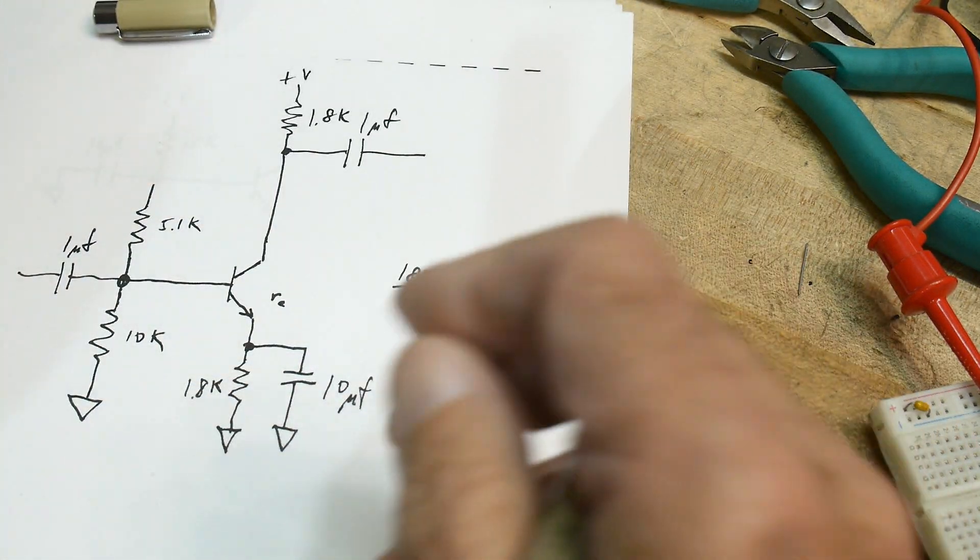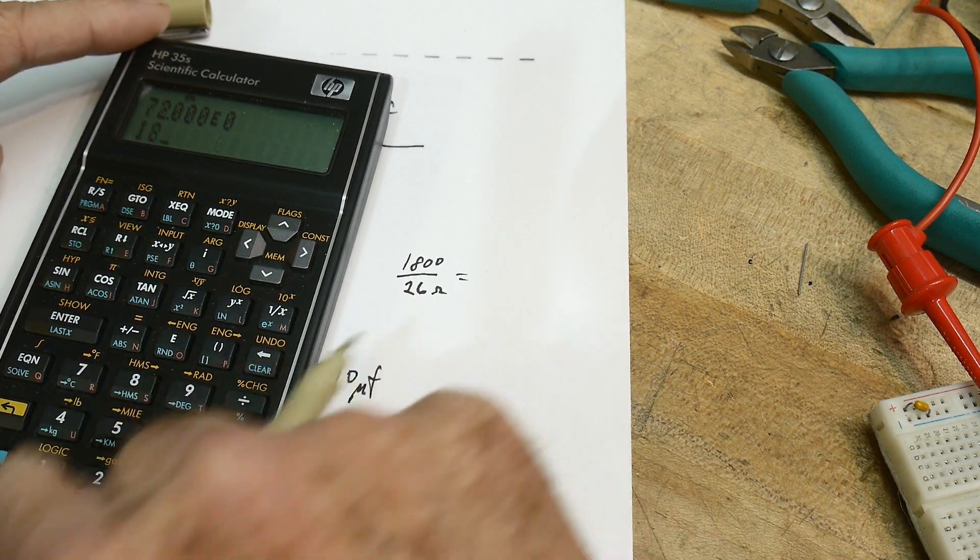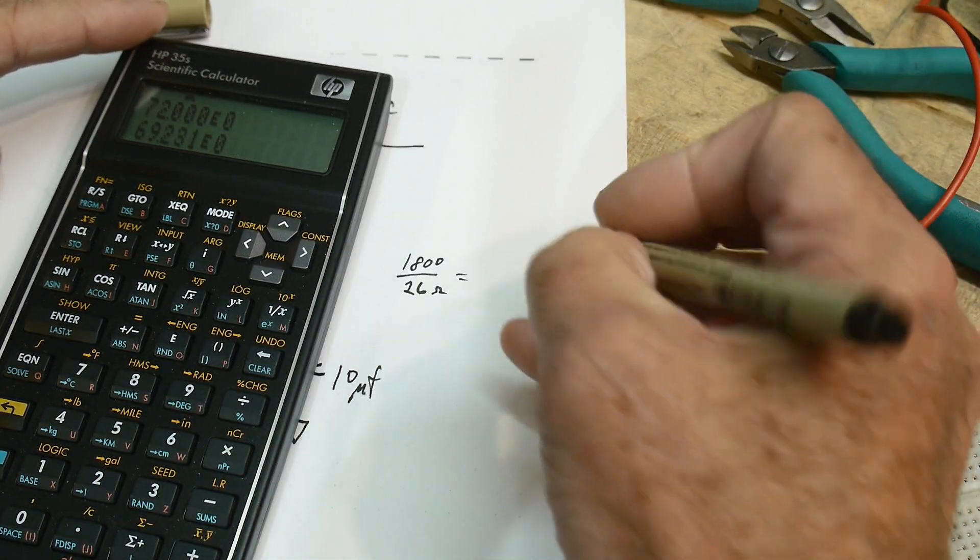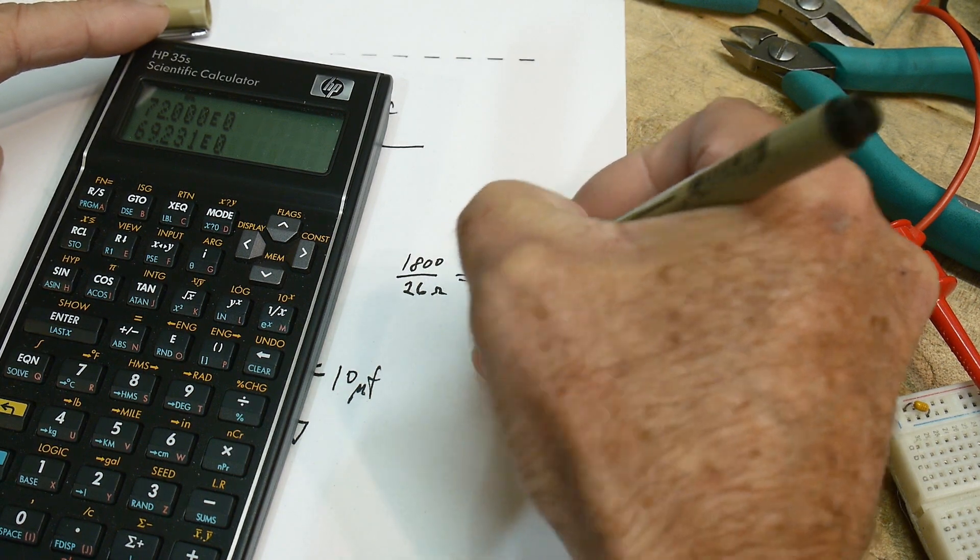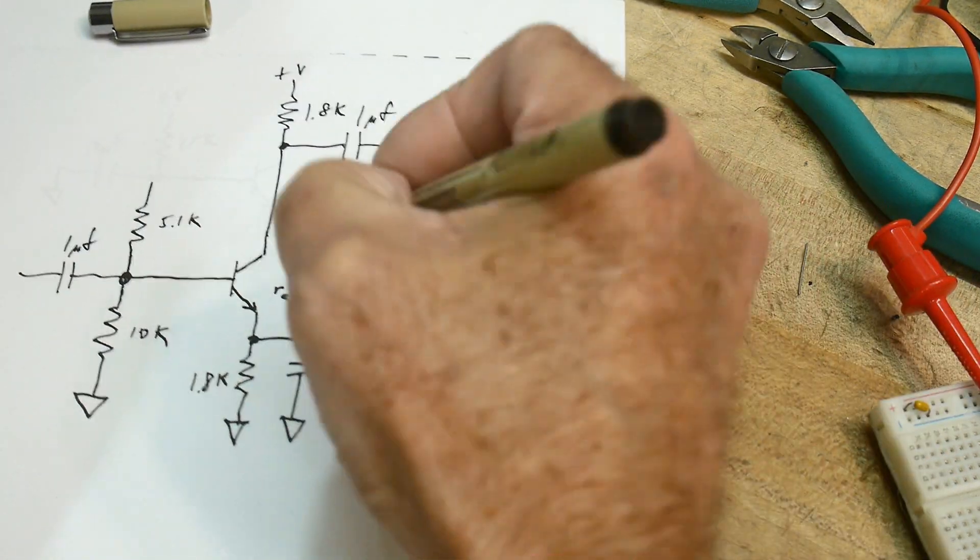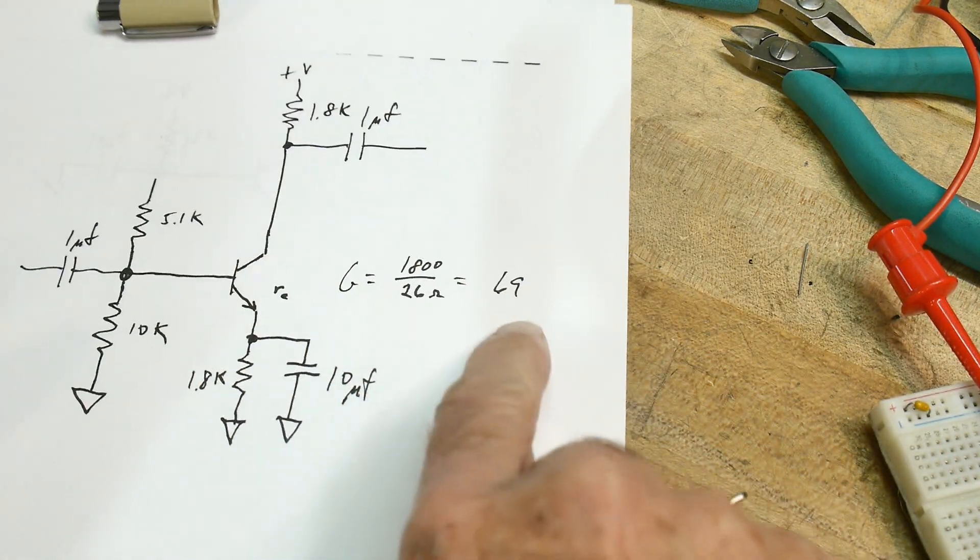And so what gain would that give us? 1800 divided by 26 would give us 69. This is a gain, so the gain would be 69.